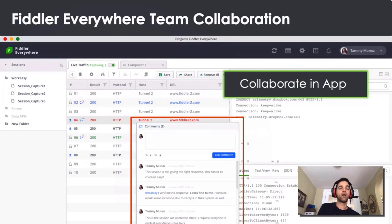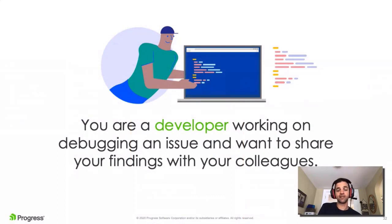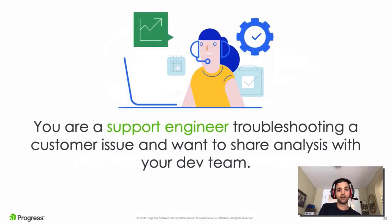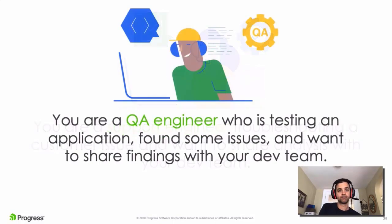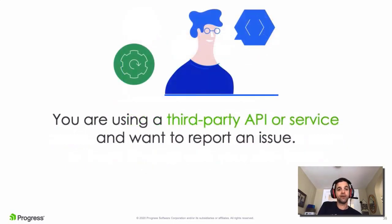You might be wondering when exactly you might want to use these collaboration features. This probably applies to most of us: say you're a developer debugging an issue and you want to share findings with colleagues; maybe you're a support engineer working on a remote customer issue and want to share your analysis with the development team; or a QA engineer who found issues and wants to share those findings with the team; or maybe you're using a third-party API and want to report an issue to the owner. All of these are valid scenarios for the new collaboration features in Fiddler Everywhere.